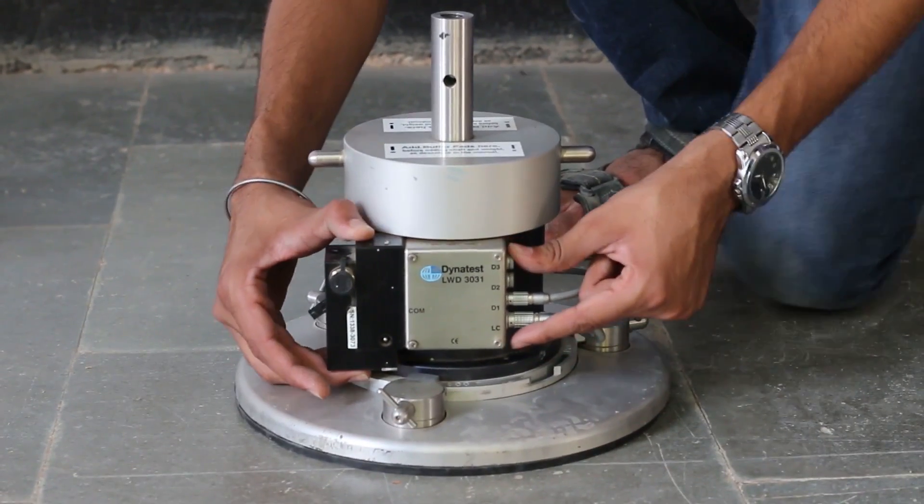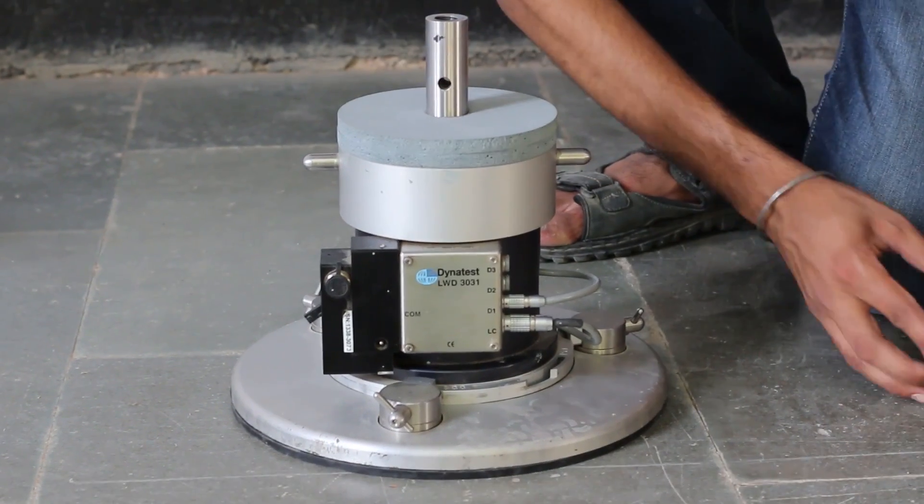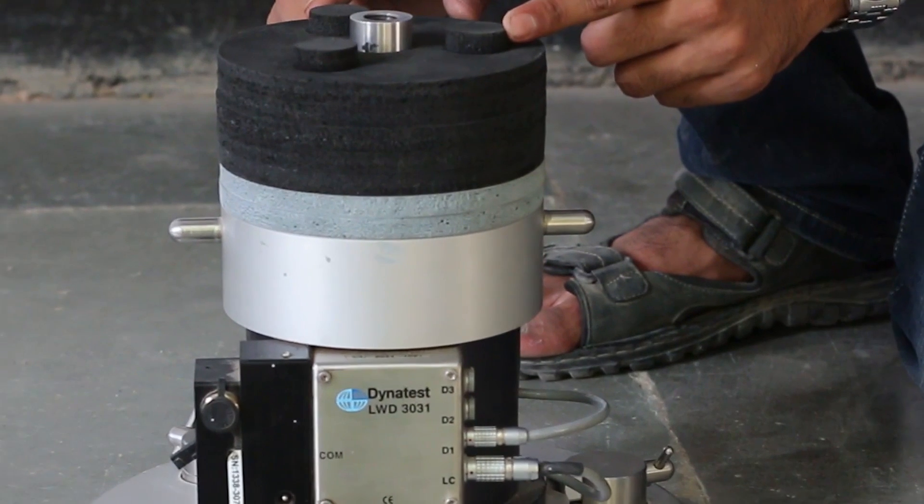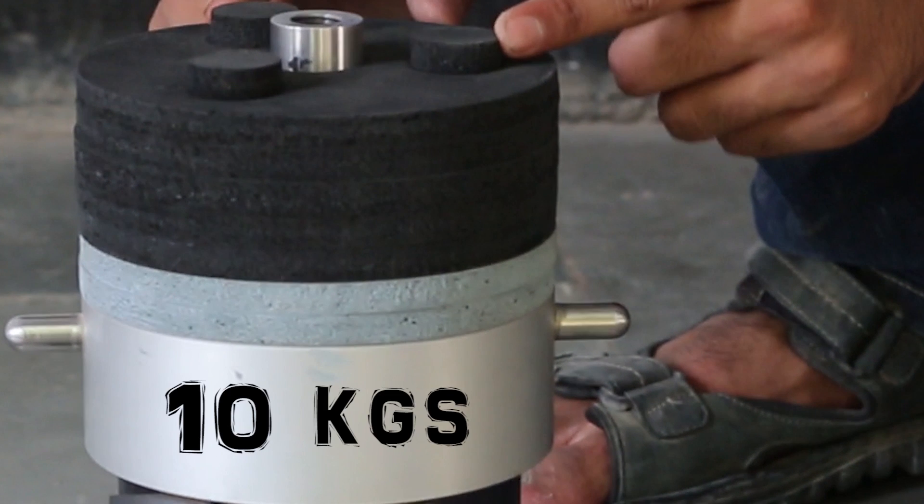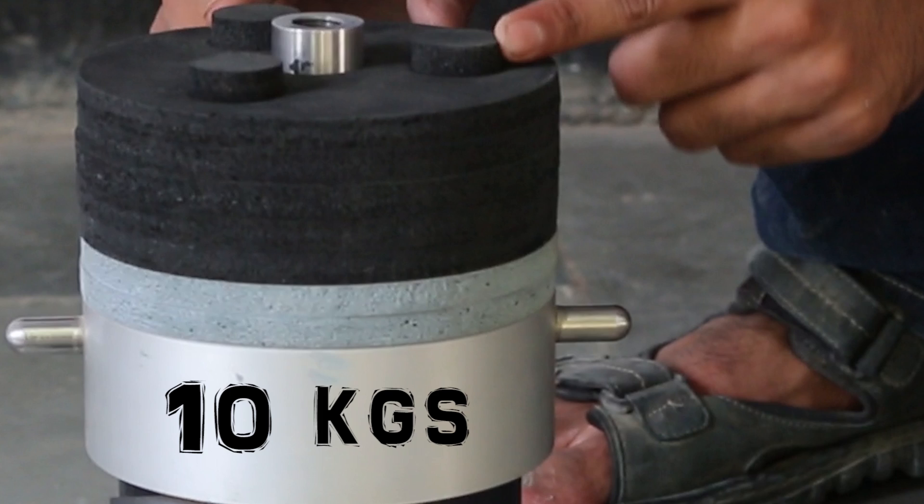First, we put grey colored two pad shock absorber at the bottom and black color four pad shock absorber at the top. This gives us a combination of shock absorbers which can take 10 kg of weight.